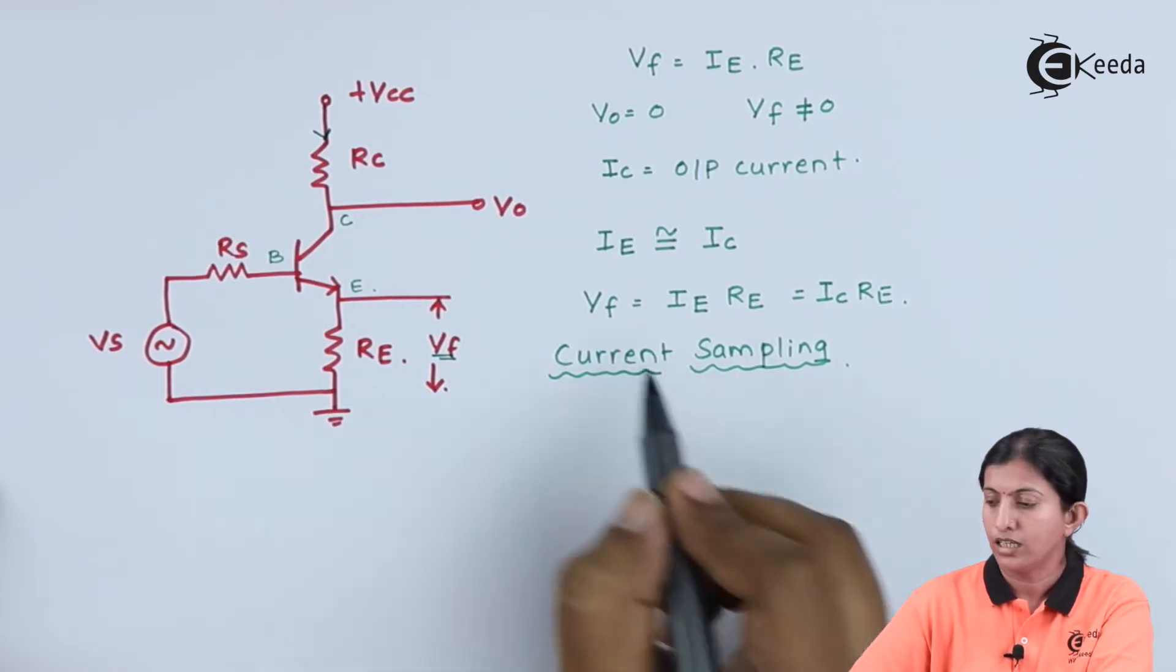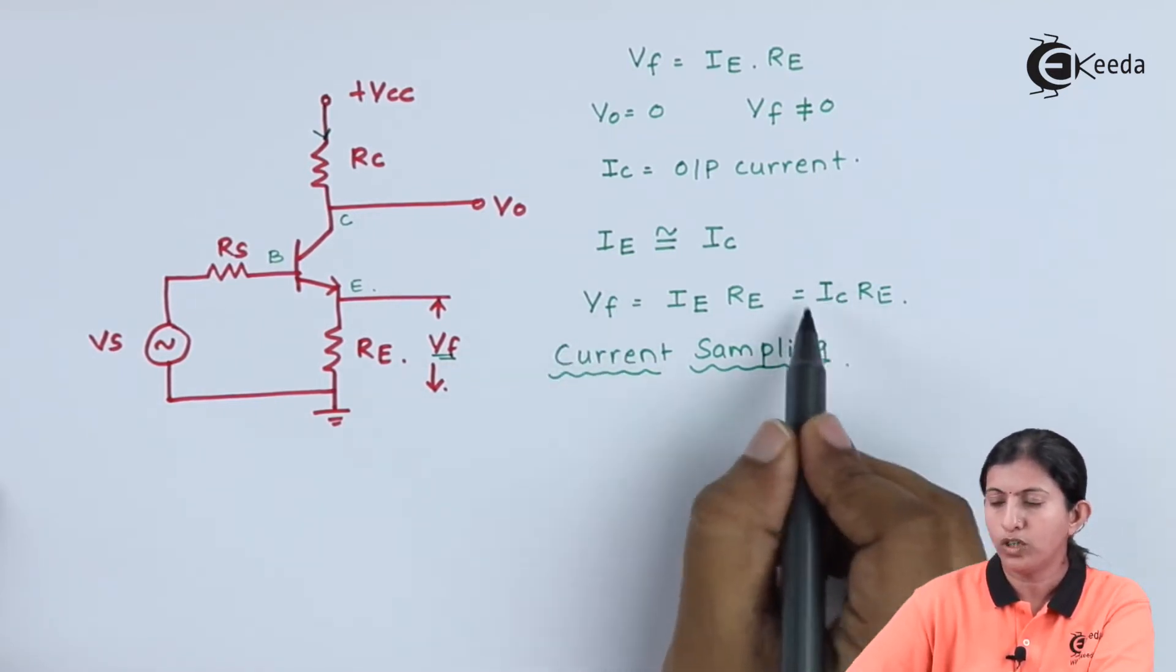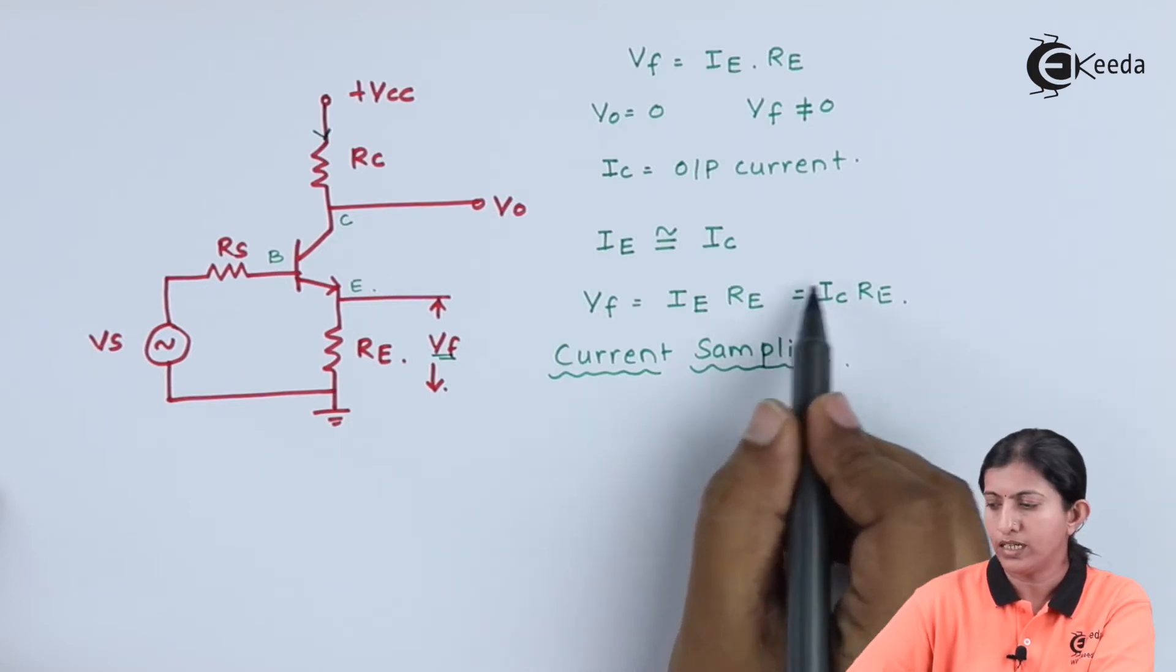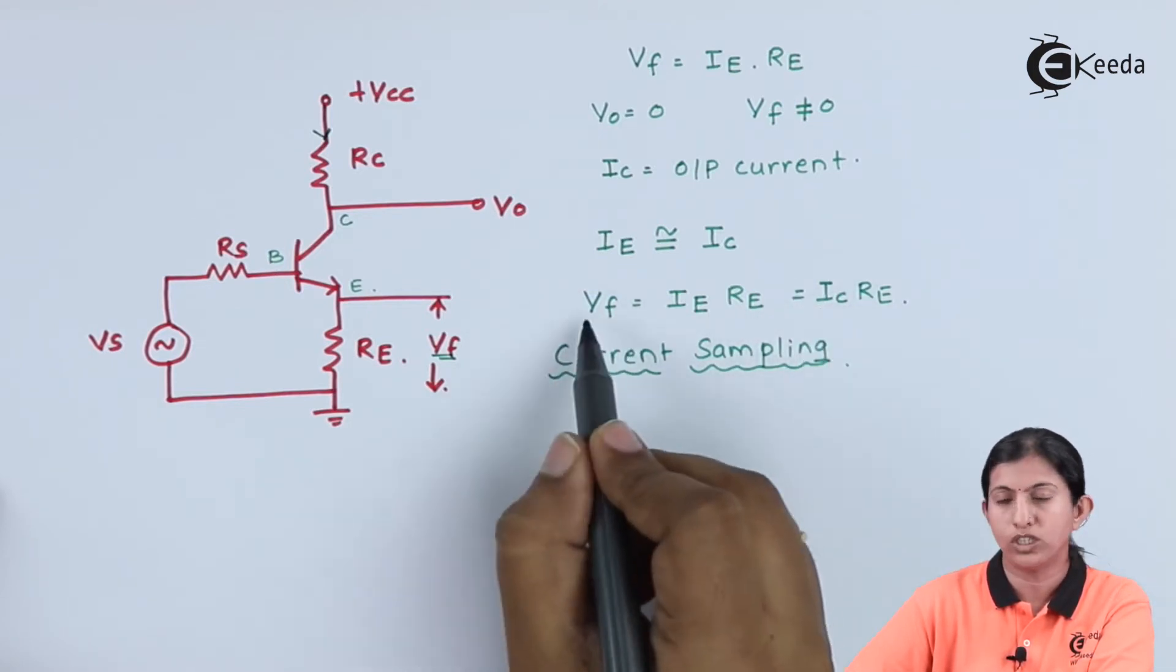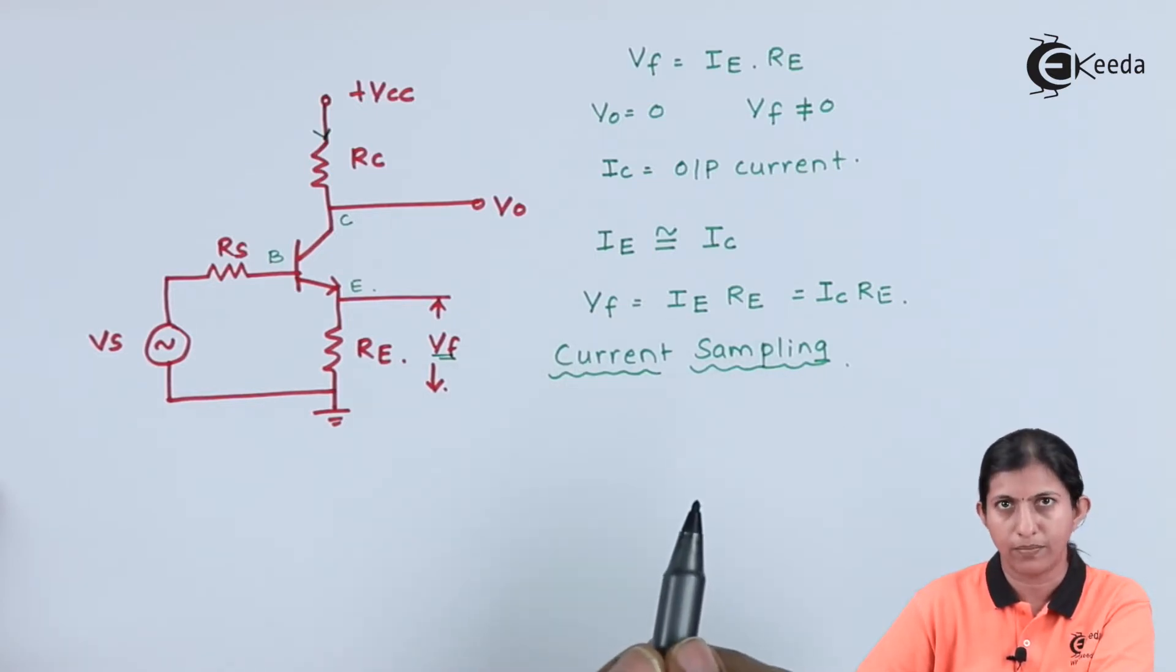That means the feedback voltage depends upon the output current. If the output current is zero, then the feedback voltage is also zero. Hence, this sampling is known as current sampling.